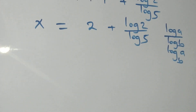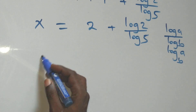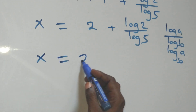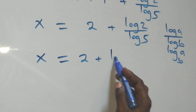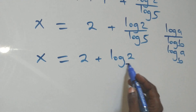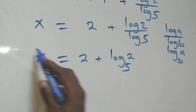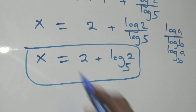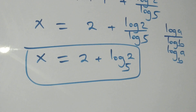Applying the change of base rule, this becomes x = 2 + log₅(2). So the value of x in this problem is x = 2 + log base 5 of 2. Let's check if this satisfies the original equation.